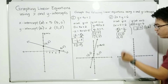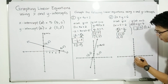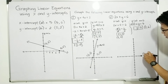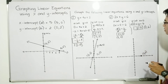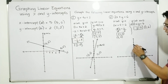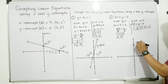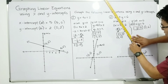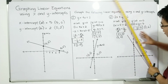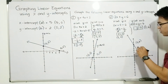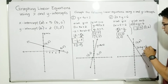Starting with the x-intercept (3, 0) — along the x-axis, from the origin: 1, 2, and 3. This is your x-intercept. For the y-intercept (0, 6) — from the origin: 1, 2, 3, 4, 5, and 6. This is the location of the second point, which is your y-intercept (0, 6). We can now connect the two plotted points to create a straight line. Finally, we put the label: 2x + y = 6. That's it.